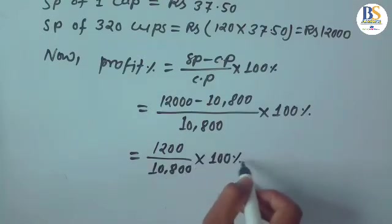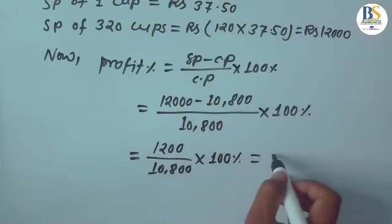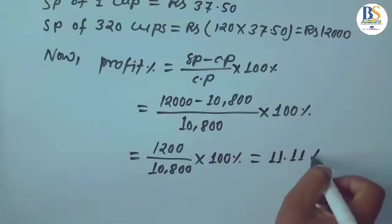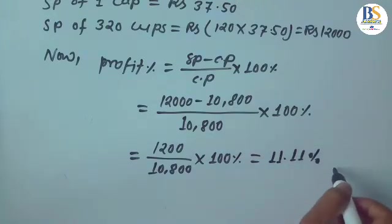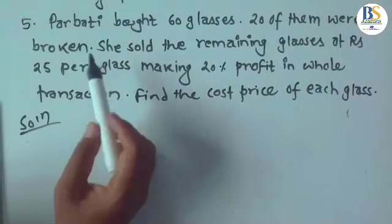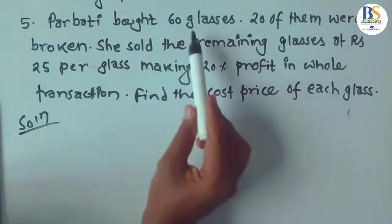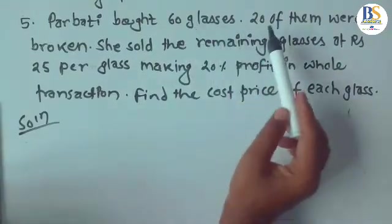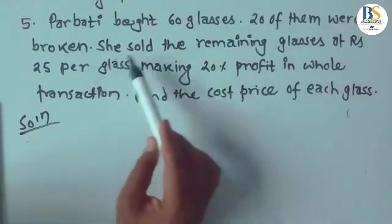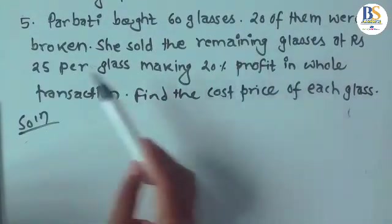Question five: Parvati bought 60 glasses and 20 of them were broken. She sold the remaining glasses at RS 25 each. SP of 1 glass = RS 25. Out of 60 glasses, 20 were broken, so remaining glasses = 40.